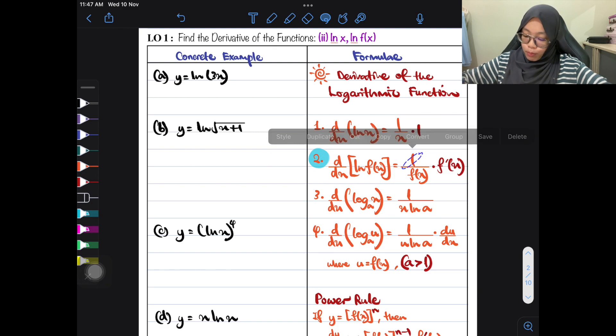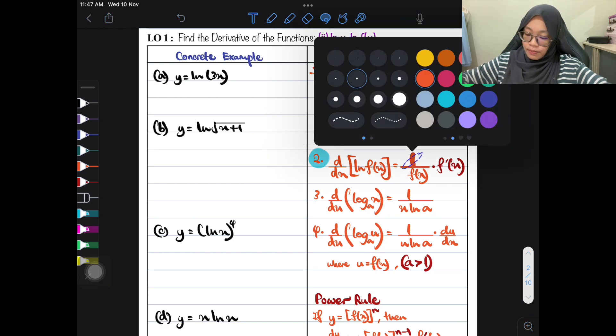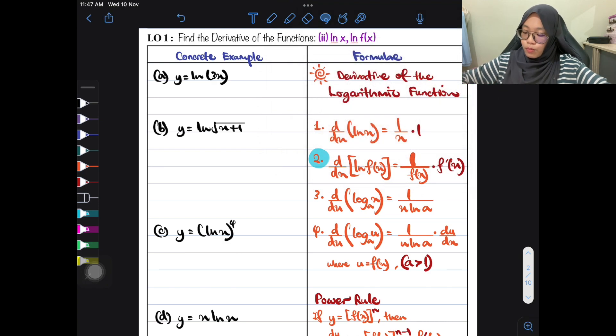I make it bold because 1 over is always the same. 1 over with its function f. Whatever the function, you just copy and paste. Bahagian denominator yang kamu copy and paste. Dia mesti 1 over dahulu. 1 over of the function di dalam ln.